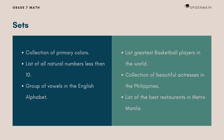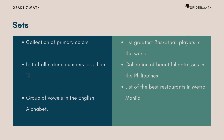To start our main topic, let me show examples and non-examples of sets. On the left, we have the set of primary colors, a set of all natural numbers less than 10, and the set of vowels in the English alphabet. On the right, we have the set of the greatest basketball players in the world, the set of beautiful actresses in the Philippines, and the set of the best restaurants in Metro Manila. We know that the primary colors are blue, red, and yellow.